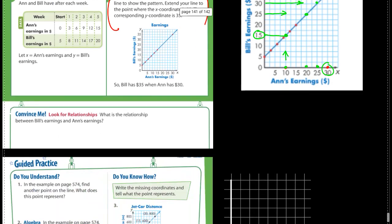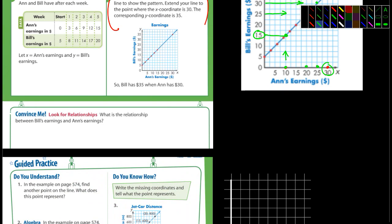And then of course the last one they talk about is 30 and 35. So down below here at the 'please convince me,' what's the question they ask? It says what's the relationship between Bill's earnings and Ann's earnings? Well there's lots of ways you could phrase this, but Bill always has five dollars more than Ann.